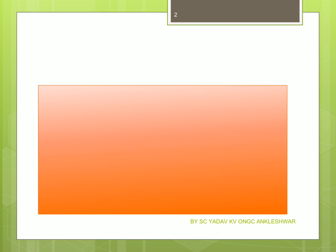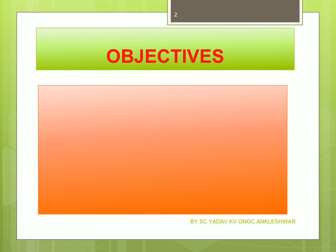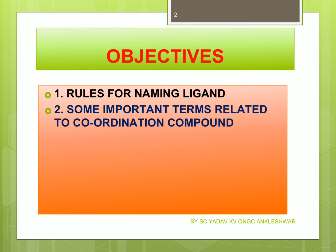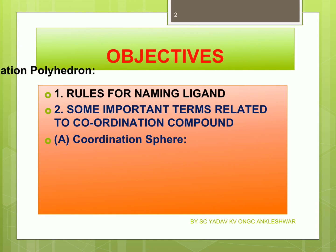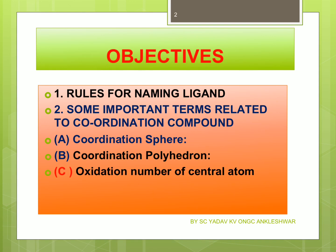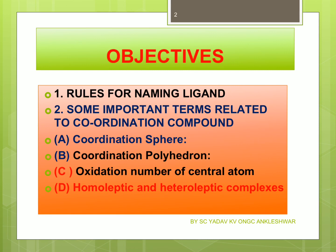Today in coordination compounds, what are the objectives? We are going to study: rules for naming ligands, some important terms related to coordination compounds, what is coordination sphere, what is coordination polyhedron, how to find the oxidation number of the central atom, and what are homoleptic and heteroleptic complexes.